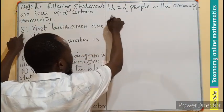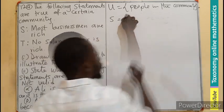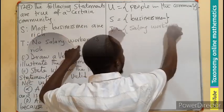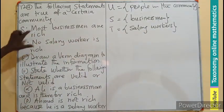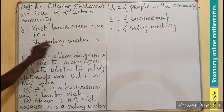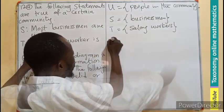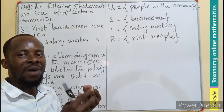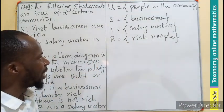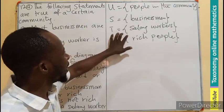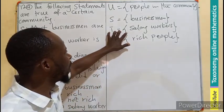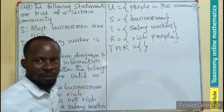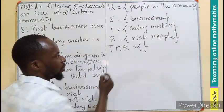First, let U equal the universal set, which is the set of people in the community. Let S be one of the subsets, the set of businessmen. Then we have T, the set of salary workers. If you clearly check, you can see businessmen, salary workers, and we are also seeing rich people. So we can also use R for rich people, which are also in the community. We have our universal set and our three subsets. Checking businessmen, they could be rich, but salary workers could not be rich. Meaning, the T intersection R will give us an empty set.